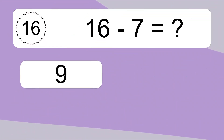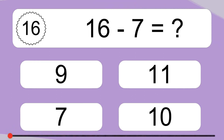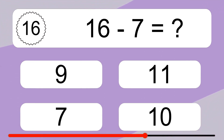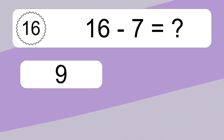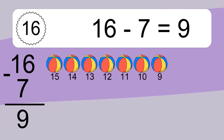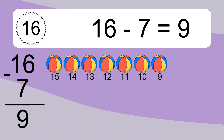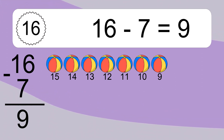16 minus 7 equals what? 16 minus 7 equals 9. Let's count it. 15, 14, 13, 12, 11, 10, 9.